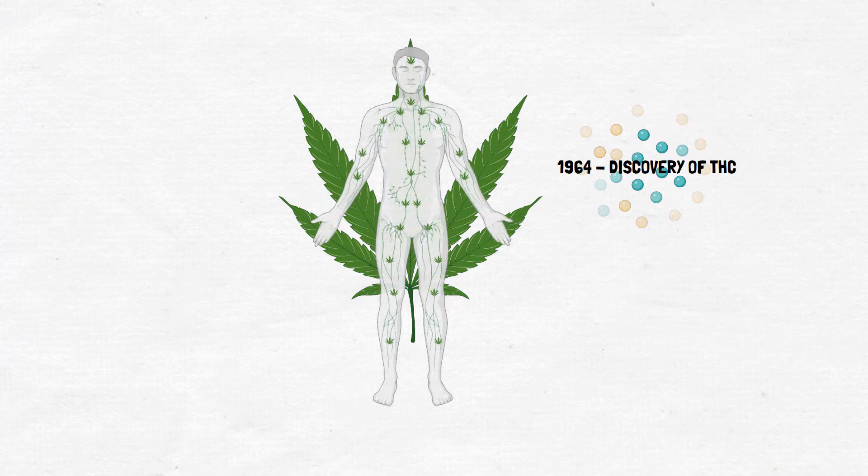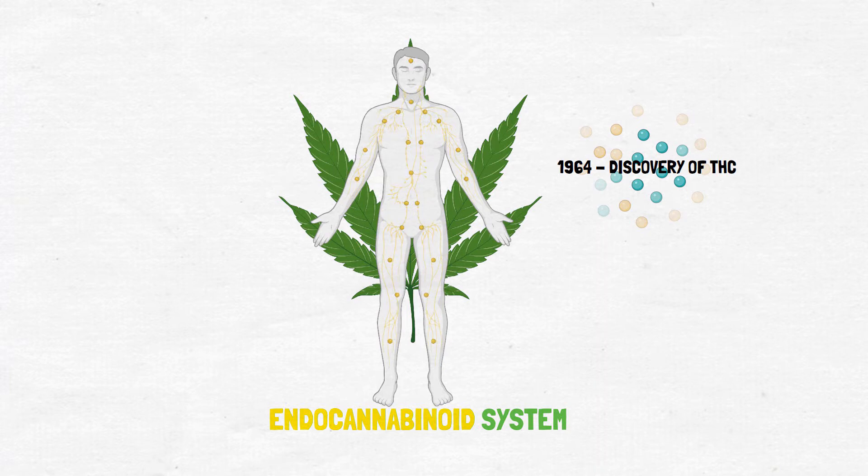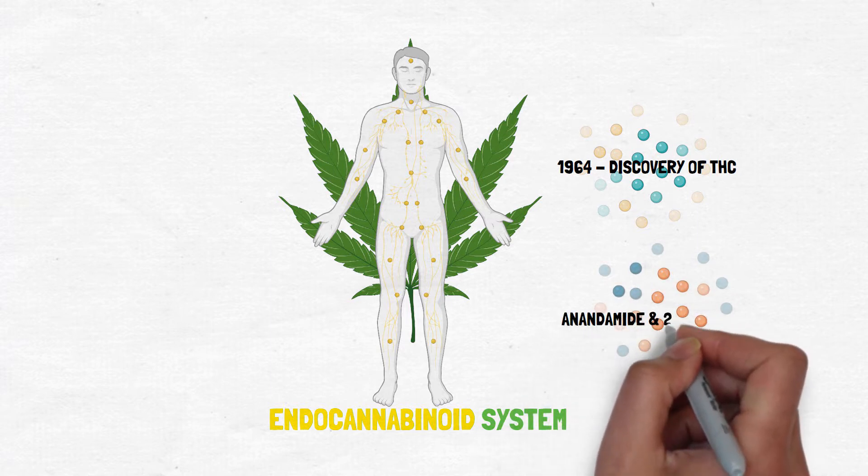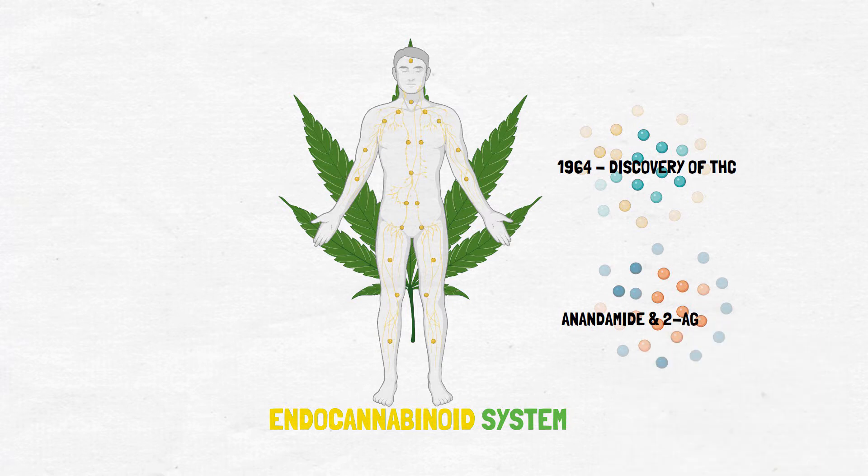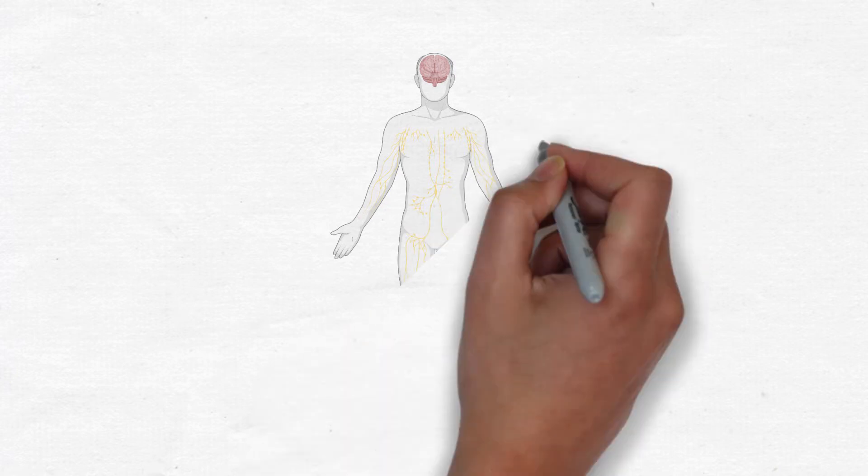The word endocannabinoid simply means cannabis-like molecules that normally occur inside us. These molecules, named anandamide and 2-AG, are the endogenous counterpart of THC and activate the endocannabinoid system.